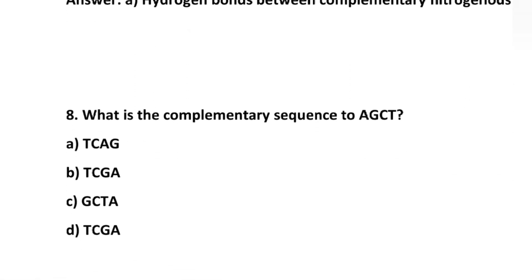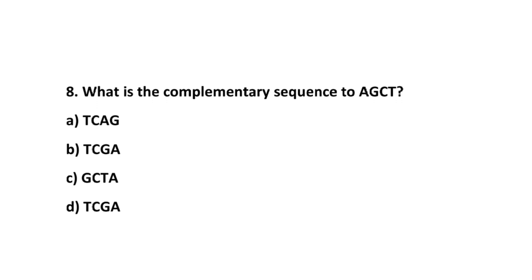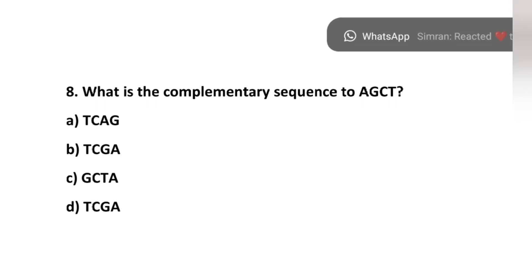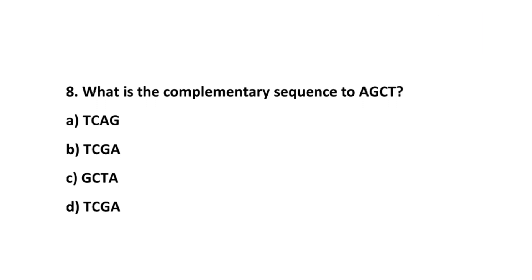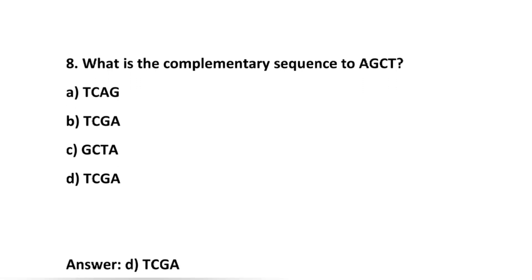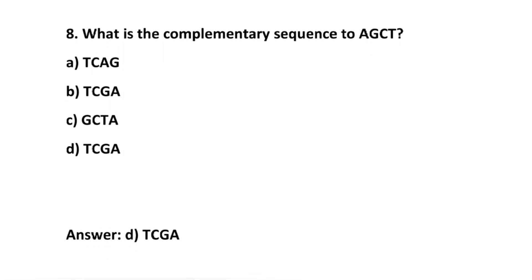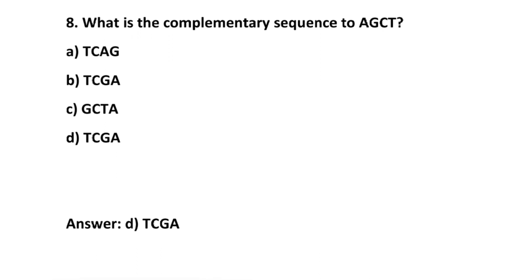Number 8: What is the complementary sequence to A, G, C, T? Option A: T, C, A, G. Option B: T, C, G, A. Option C: G, C, T, A. Option D: T, C, G, A. The correct answer is option D: T, C, G, A — because A is complementary to T, G is to C, C is to G, and T is to A.